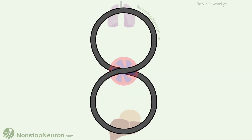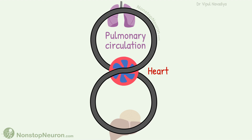The simplest way to show the circulation of blood is a figure of 8. The heart is at the crossing of two lines in the middle. The upper loop is pulmonary circulation and the bottom is systemic circulation. The blood circulates in the shape of 8.